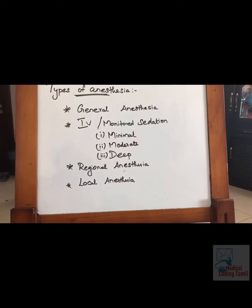For example, in a tooth removal, the doctor gives anesthesia only around the decayed tooth — it numbs only the small area around it. These anesthesia type definitions help you understand what type of anesthesia is given and how to code properly. They may also be asked as guideline questions in examinations.